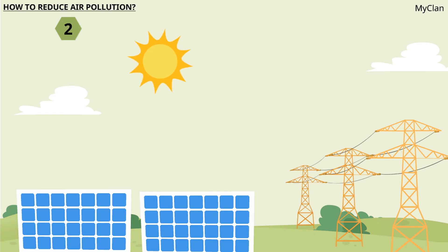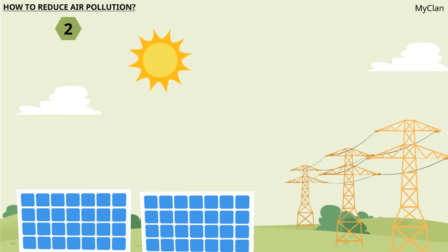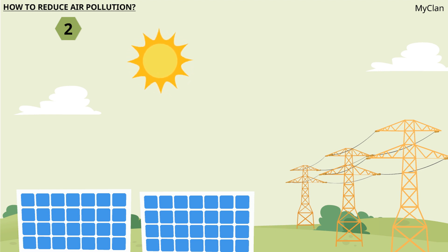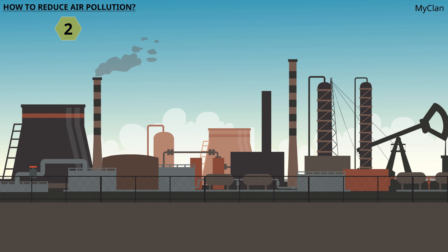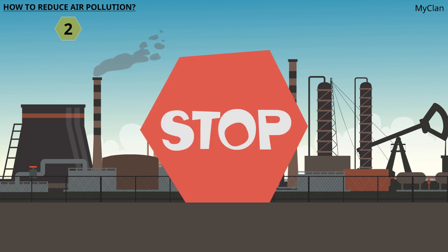Companies and governments should switch to electricity generated by wind power, solar power, or renewables. Energy-efficient power generation methods should be developed by governments and private companies. Governments should also warn and restrict factories emitting harmful gases, and if they do not obey, government should ban such factories.